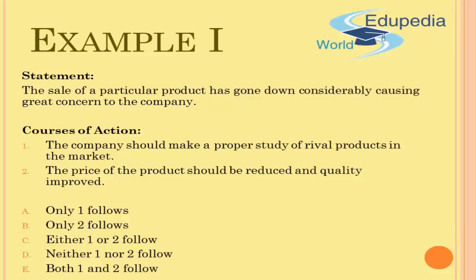Without evaluating the reason behind the dip in sales, blindly reducing price and increasing quality may lead to undesirable outcomes such as reduced profits and fewer repeat sales. So after evaluating both courses of action, only the first one follows. I'll go ahead and select option A — only the first course of action is valid.